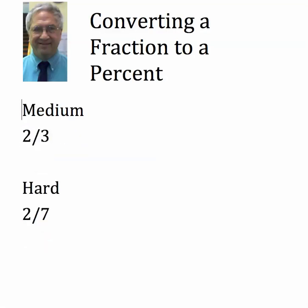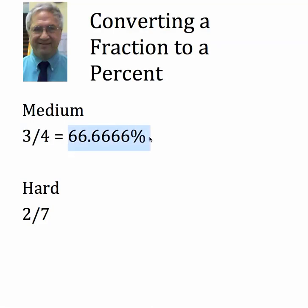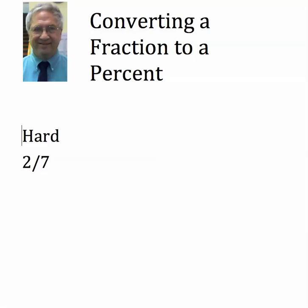Medium ones just involve a little bit more calculation. If you know that one-third is 33% and you've memorized that, then two-thirds would be double — approximately 66%, or to be accurate, 66.66 repeating percent. That's one I call medium. The same way I might call three-quarters medium — three-quarters is equal to 75%. With easy and medium, you really just have them in your head because you've been working with percents.